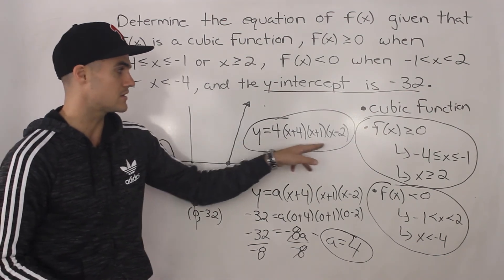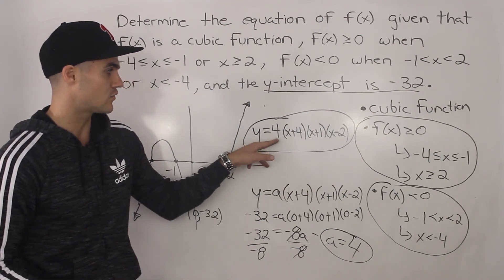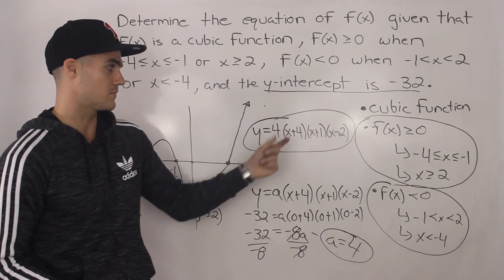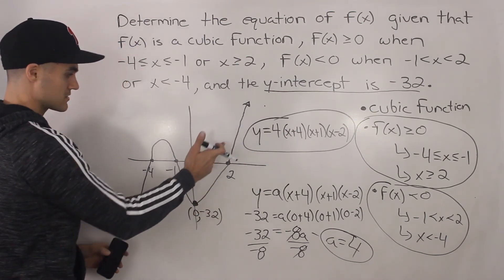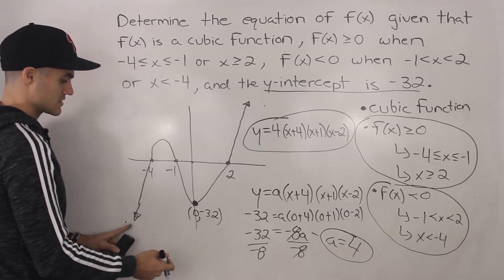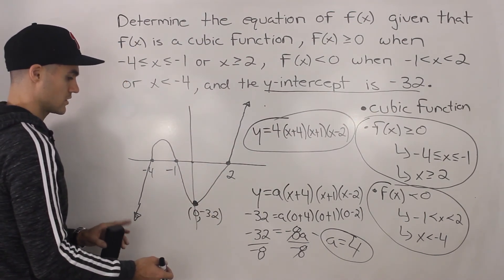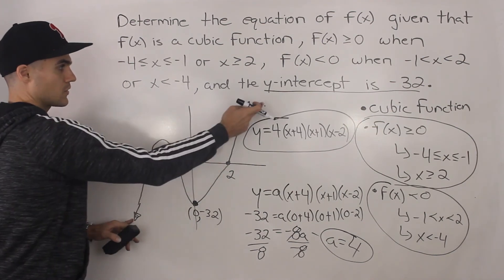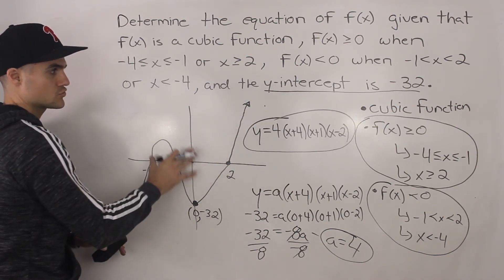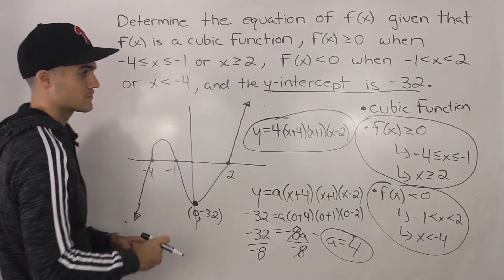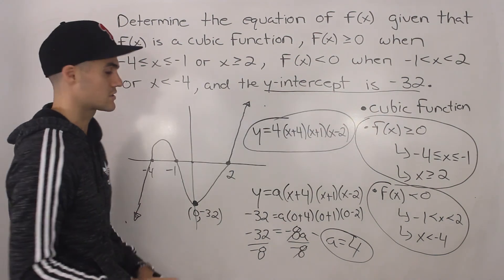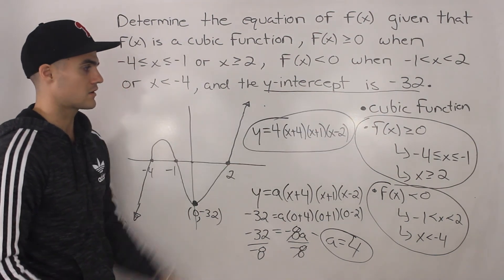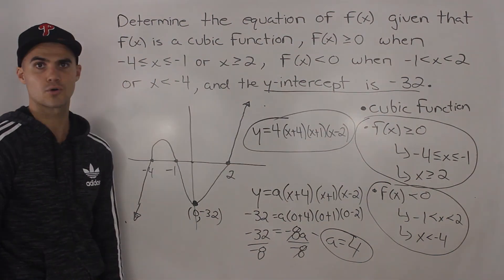That makes sense that we got a positive leading coefficient. If we expand everything, 4 times 1 times 1 times 1 gives us positive 4. It makes sense because the end behaviors are from quadrant 3 to quadrant 1, which we determined when we drew the graph to satisfy those conditions. So we can be fairly confident this answer is correct.